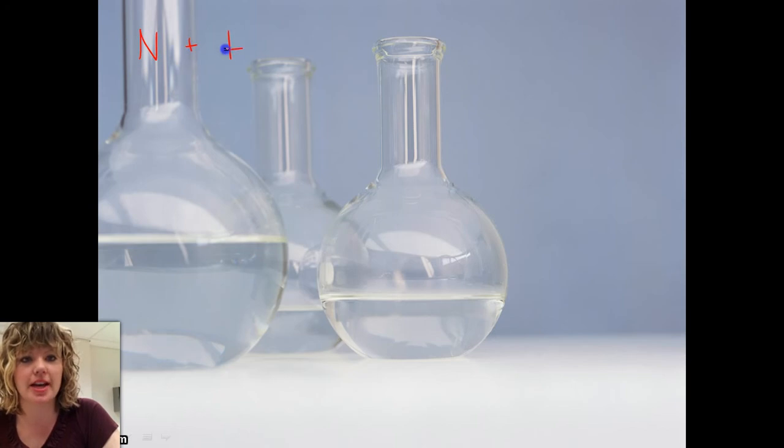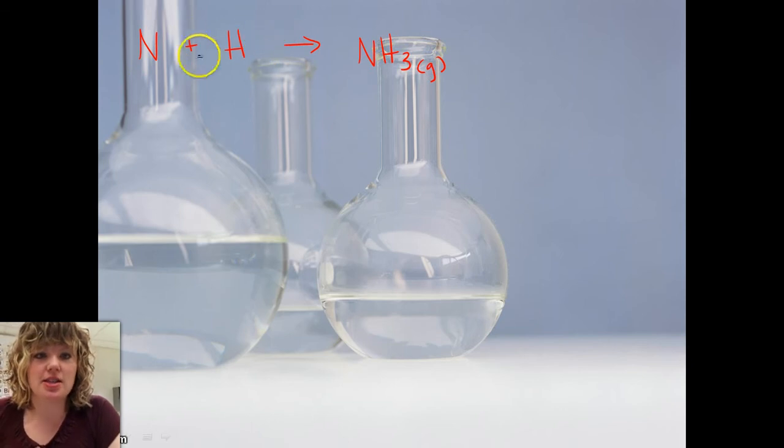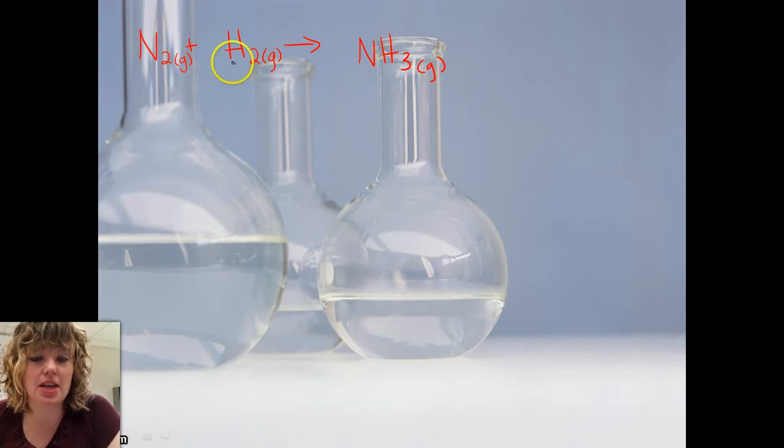If we start out with nitrogen plus hydrogen making ammonia, first of all we know these are both gases. We know all three of these are gases. So we can go ahead and put our state of matter here, and we notice these two are diatomic molecules. That means they're going to bond with themselves, so we're going to put the two beside those, and we know that they're gases. And now we can make some inferences about this after we balance it, because everything would be equal.